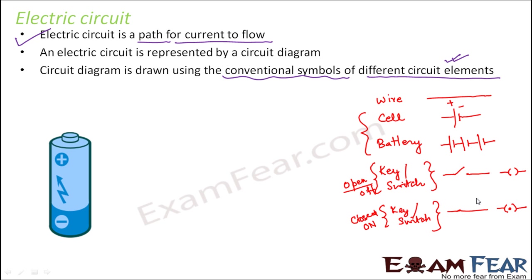These are the common symbols we will be using for now. As you go to higher classes you will learn about other circuit elements like resistance, capacitance, voltmeter, ammeter, and so on. For now we will just consider these simple symbols. Let us now try to draw a circuit using these symbols — a circuit with a bulb, a battery connected to the bulb, and a key.